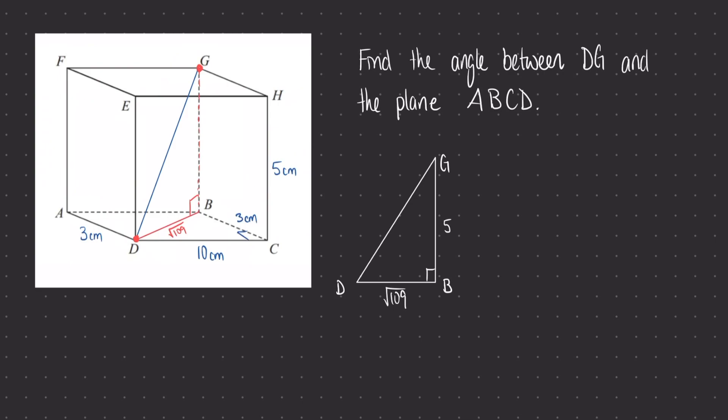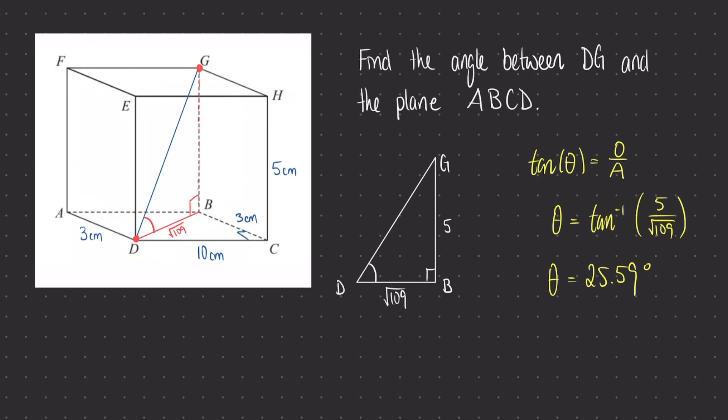In the next part of this question, we're asked to find the angle between DG — this diagonal going up through the cuboid — and the plane, or the base of this cuboid, ABCD. We've already discussed that the right angle is formed between the shadow of the line DG and the perpendicular line upwards. Once we've got the shadow, we know that we can also draw on the angle between the line and the plane — that would be this angle here. Let's mark this on our own diagram on the right, so we're looking for the angle GDB. Now we have a right angle triangle, so we can see we've got the opposite and the adjacent of that angle. That means we're going to need to use tan. Substituting in the side lengths that we know and doing the inverse tan of both sides, we would find that the angle between DG and the plane is 25.59 degrees.